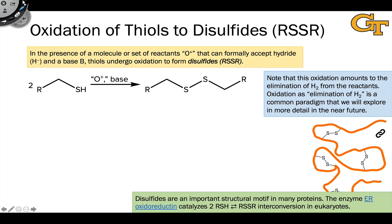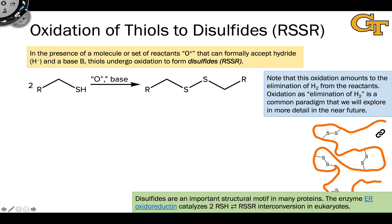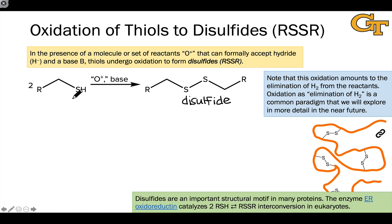There's one other type of oxidation of the thiol that's important to recognize in a biochemical context: the conversion of two equivalents of a thiol into what's called a disulfide. A disulfide is characterized by a sulfur-sulfur bond, and it amounts to an oxidation because we've gone from an oxidation state of minus two at the sulfur atom to an oxidation state of minus one at each of the linked sulfur atoms in the disulfide.